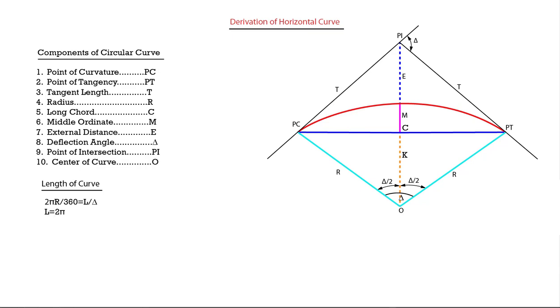Dividing by 360 gives us the arc length formula: L = πR·delta / 180.